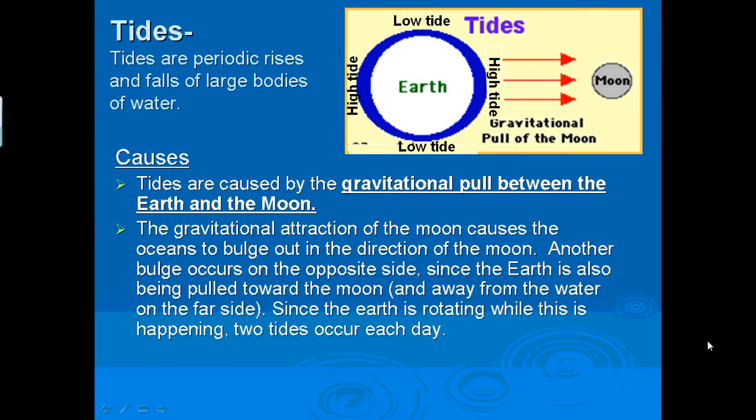So if you look at the diagram, this will make a little bit more sense. Another bulge occurs on the opposite side since the earth is also pulled towards the moon and away from the water on the far side. Since the earth is rotating while this happens, two tides occur each day. Tides carry sediment out to the sea and bring in new sediment.